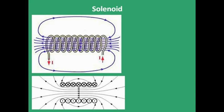A solenoid is a current-carrying wire which is closely wound into circular loops. Because of the current there will be some magnetic field, and I want to calculate it. My first assumption is that it is a very long solenoid — actually an infinite solenoid in length, but for practical purposes if the length is very, very greater than the radius of each circular loop, that will do. Using this I want to calculate the magnetic field inside the solenoid. The second assumption is that the solenoid is closely wound.